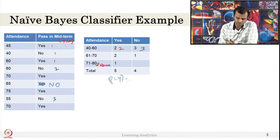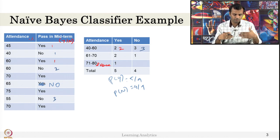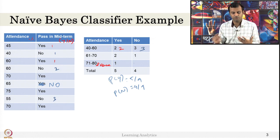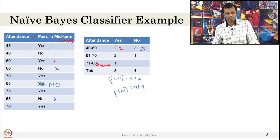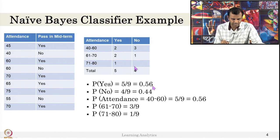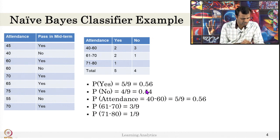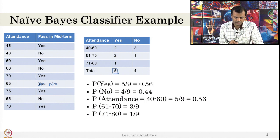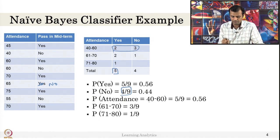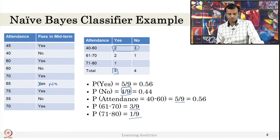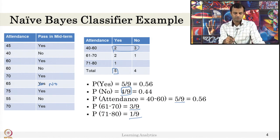Probability of pass is 5 by 9, probability of not pass is 4 by 9. Also, probability of attendance 40 to 60 is 5 out of 9, probability of 61 to 70 is 3 out of 9, and 71 to 80 is 1 out of 9. This frequency table tells you the value of each bin and their corresponding yes and no probabilities.